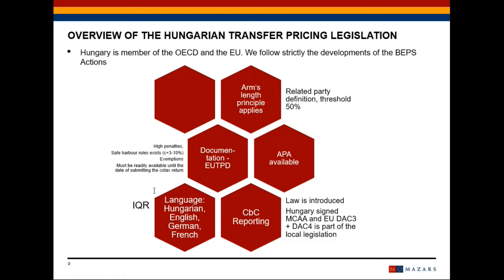The adjustment must be made not only for corporate tax base, but also for local business tax base and also for innovation contribution as well. The arms length principle applies to related parties. In Hungary, the threshold is 50 percent plus, so it means that if anybody has direct or indirect way more than 50 percent ownership or voting rights in another company, then they constitute as related parties as well.